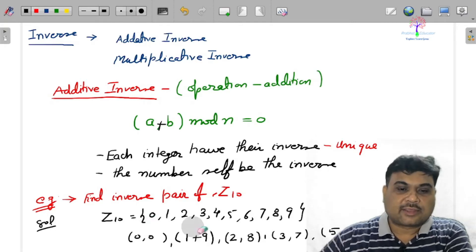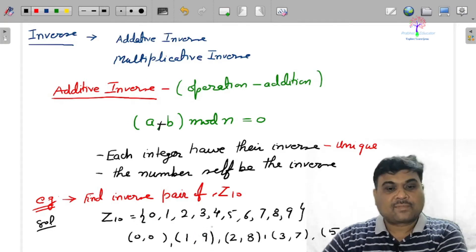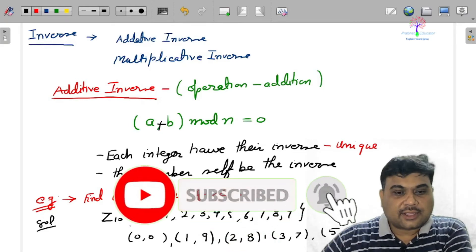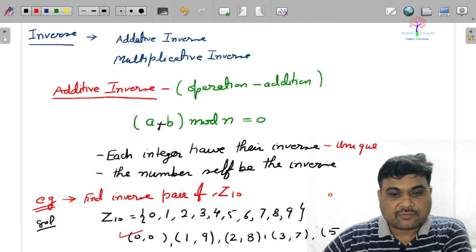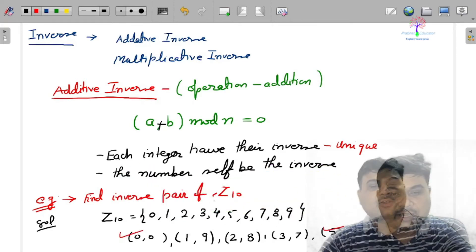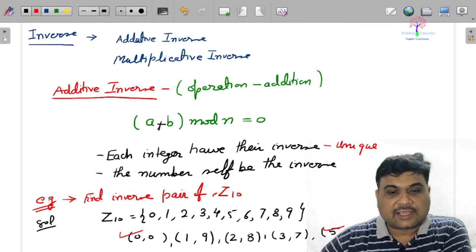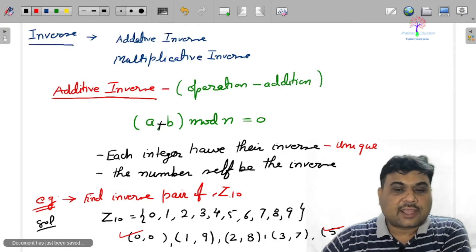I think I have covered all, because if you are talking about 1, 9 or 9, 1, that is the same thing. So don't bother about it. So here you can see that the number is itself inverse in case of 0, 0 and 5, 5, or each number has their unique inverse number like 1, 9, 2, 8, like this. That is all about the additive inverse.